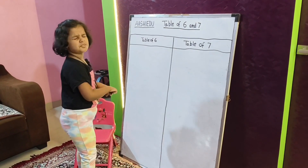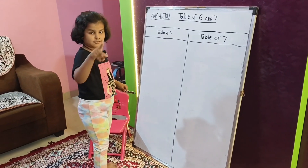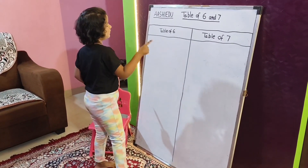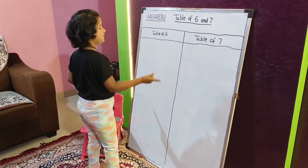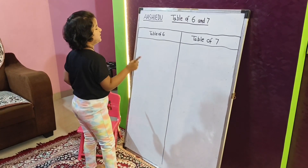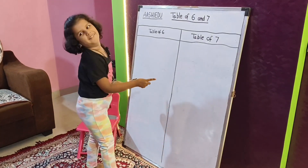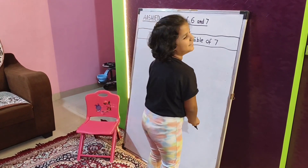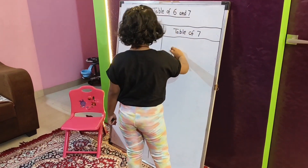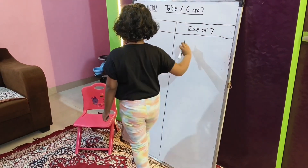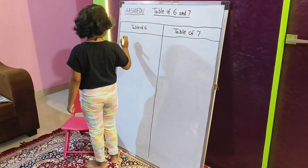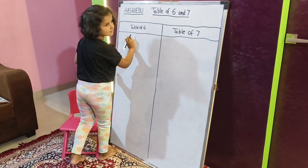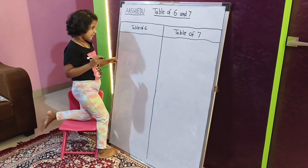Ok, which one are 2 last? 1, 2, 3, 4, 5, 6, 7, 8, 9, 10, 11, 12, 13, 14, 16, 17, 18, 19, 20, 21. Ok.